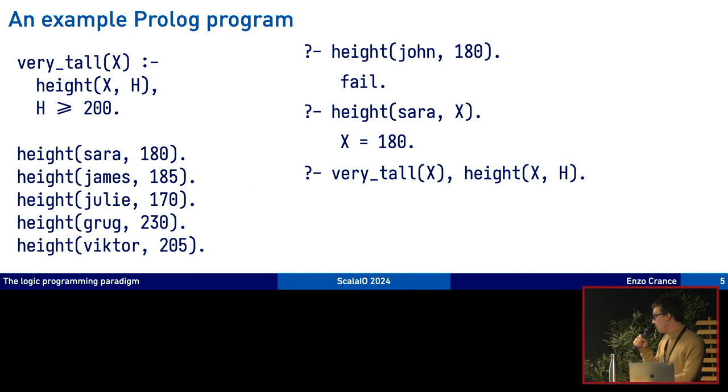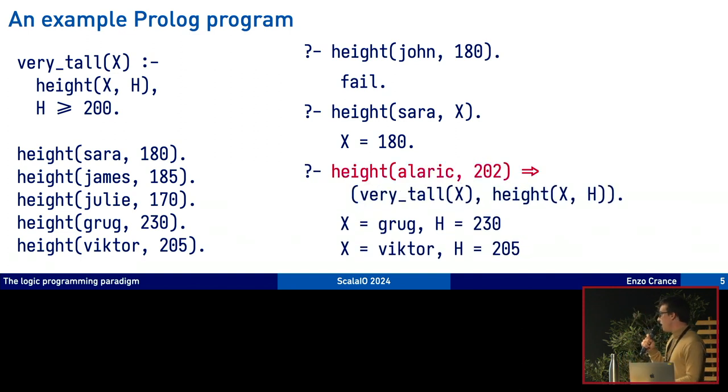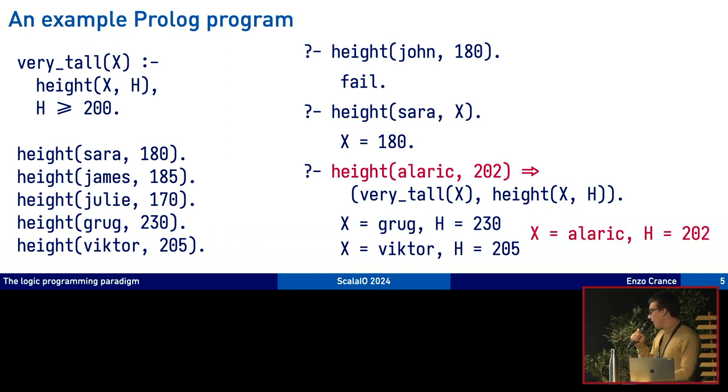We can have more complex queries by combining several predicates to execute in order. We have an x who is very tall and their height is h. This will succeed twice, first with Grug, 230, and it will also succeed with Victor, who is 205 centimeters tall. We can also add local information to the context. Every predicate is executed in a context. It initially just contains what was declared in the database, but we can add things locally. I use the arrow here to add an extra case for the height predicate, saying that Alaric is 202 centimeters tall.